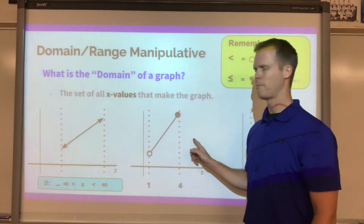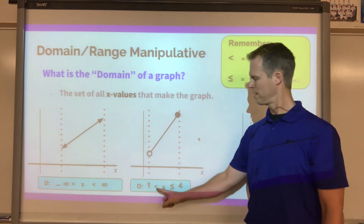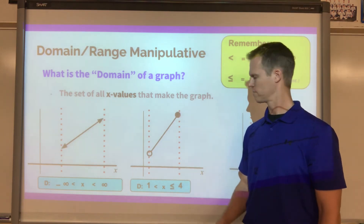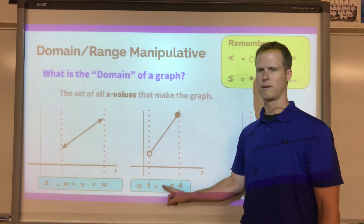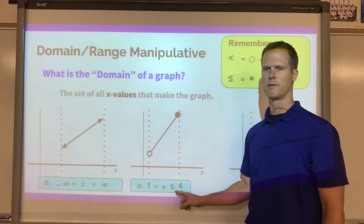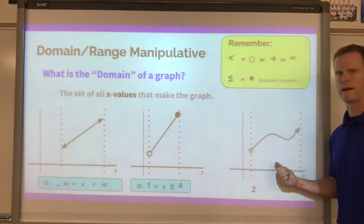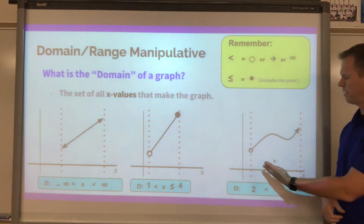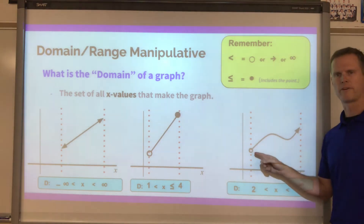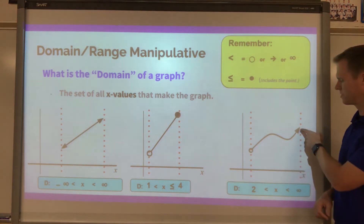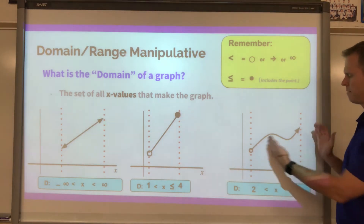For the next graph with endpoints at one and four, we don't include one, so we don't use an equal sign there. The domain is x-values greater than one and less than or equal to positive four. For the graph with a starting open circle at two going to an arrow at infinity, we use strict less-than symbols for both endpoints, since both are open-circle or arrow types.